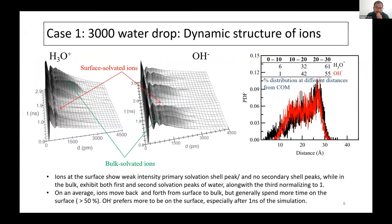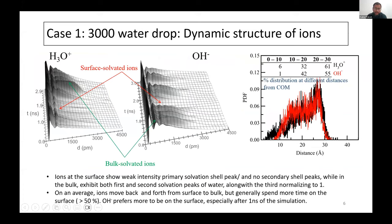The next thing we look at is whether the ions are surface-solvated or bulk-solvated, and what kind of dynamic structure they possess. We calculate a dynamic radial distribution function, which shows that these ions are in the surface region around 55 to 61% of the time. For the rest of the time, they are at least three to four monolayers inside the surface, and very rarely near the center of mass. This shows that the ions don't prefer bulk solvation — they prefer to be on the surface for the longest time.